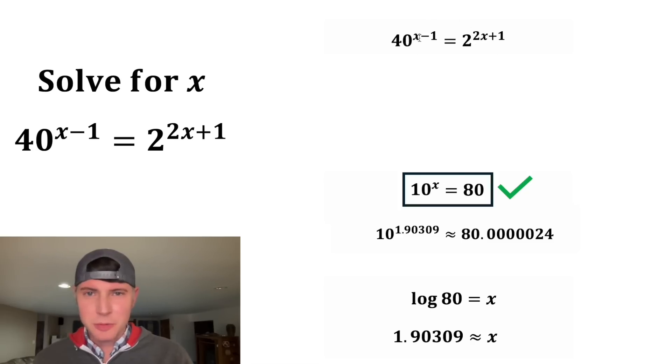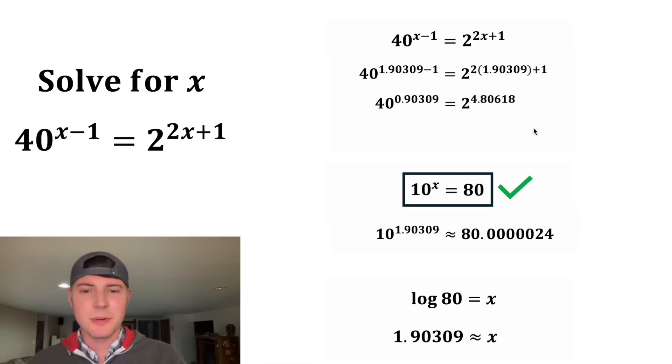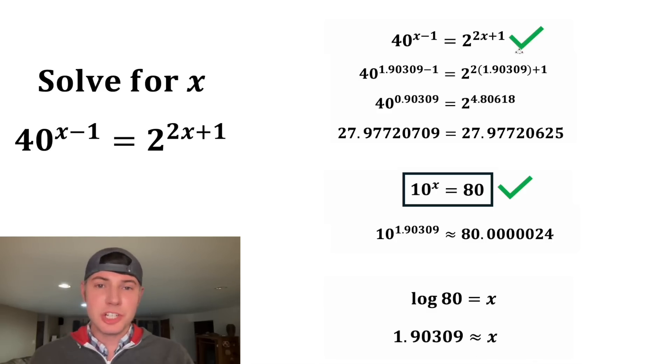But we should double check to make sure it checks out with this up here. We plugged in this decimal in the place of x. Each of these can be simplified a little bit. It's 40 to this decimal equals 2 to this decimal. Now after we plug this into calculator, we get 27.97720709 equals 27.97720625. And the only reason why there's any difference is because we truncated this decimal. So it checks out.